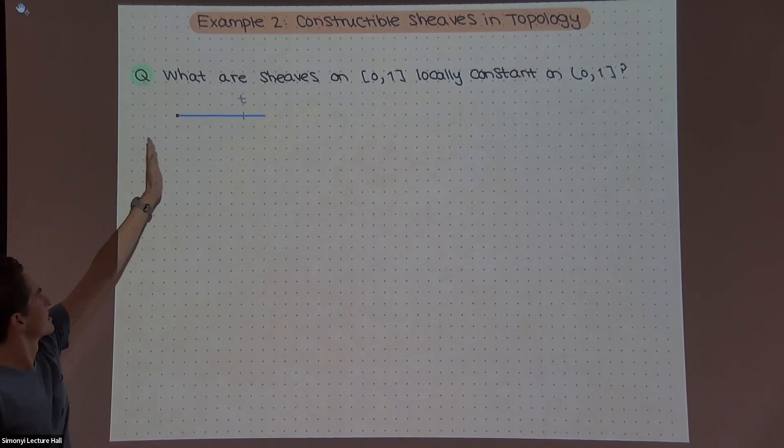Okay, so those are two stories where you have some category of sheaves you cared about, and there's a more combinatorial object that classifies it. Now, you can start to try to ask this type of question in more generality. So I want to do some examples in topology where you come up with an answer like this. So maybe a simple example is, what are sheaves on the unit interval that are locally constant on each of these pieces?